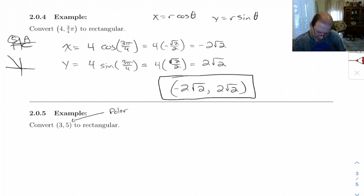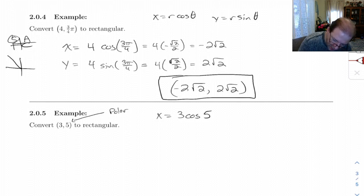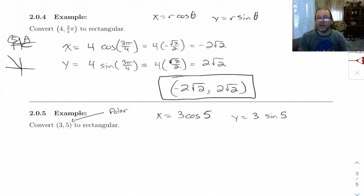Let's see. 3, 5. I mean, as far as finding the coordinates, all we do is we do x equals 3 cosine 5. And y equals 3 sine 5. And remember, that's 5 radians.